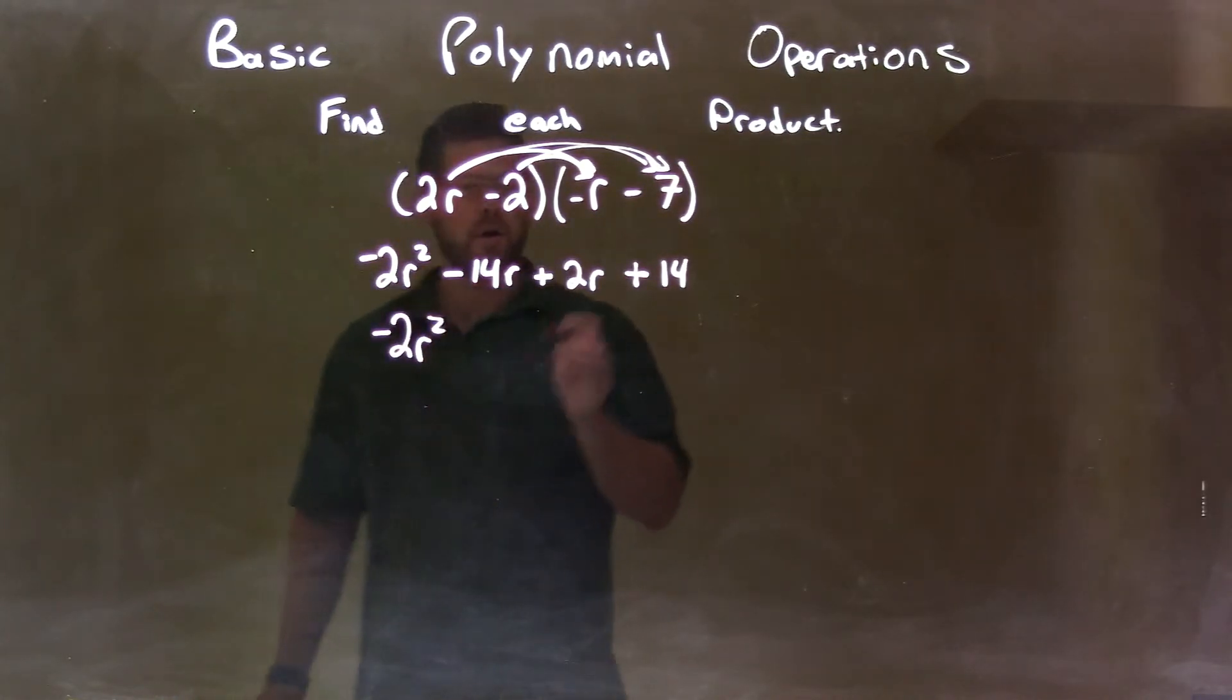Minus 14r plus 2r is minus 12r. So we have minus 12r right here. Then we have a plus 14 at the end that comes down, plus 14.